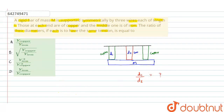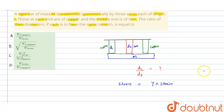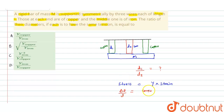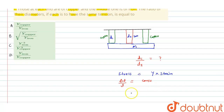According to Hooke's law, stress is directly proportional to strain, so stress equals Y (Young's modulus) times strain. Since the rigid bar is supported symmetrically, the extension delta-L in all wires is equal. Since the length L is the same for all, delta-L upon L — that is, the strain — is constant for every wire.